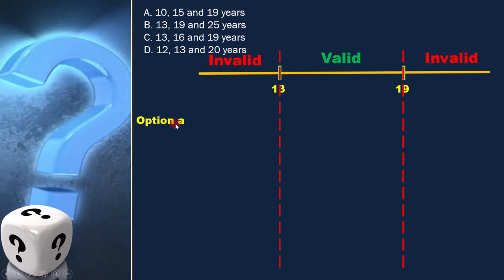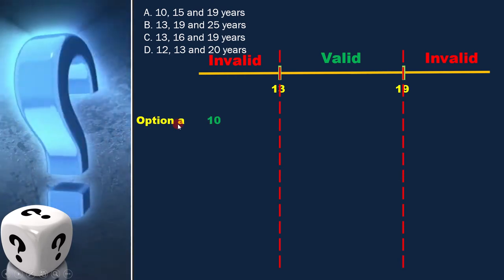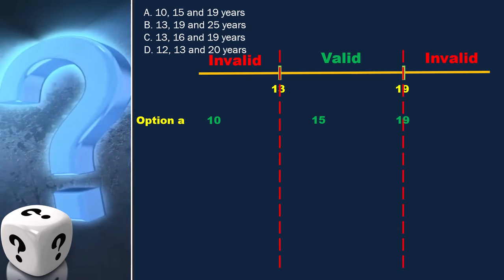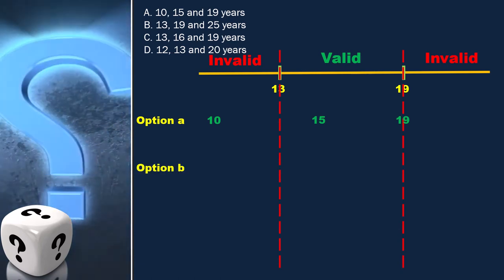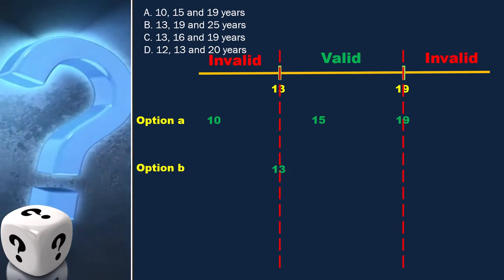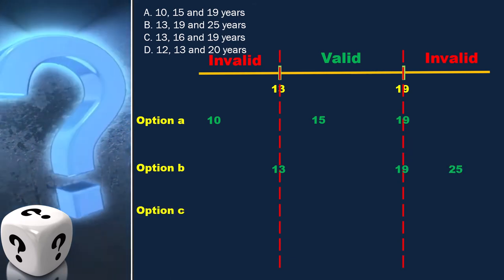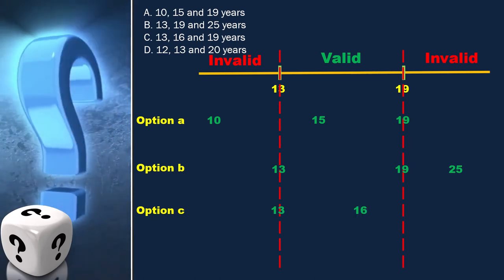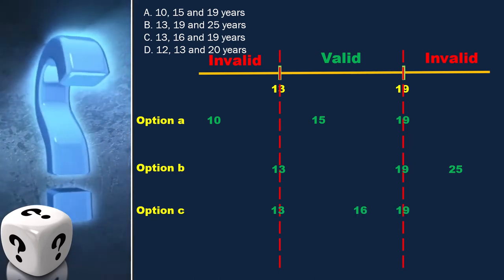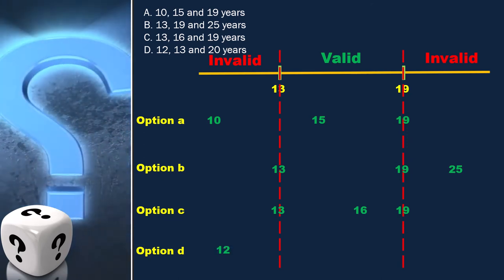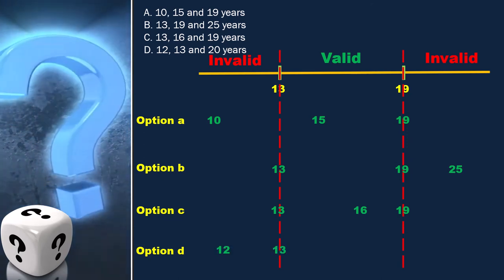Option A is 10, 15, and 19. Option B is 13, 19, and 25. Option C is 13, 16, and 19. Option D is 12, 13, and 20.